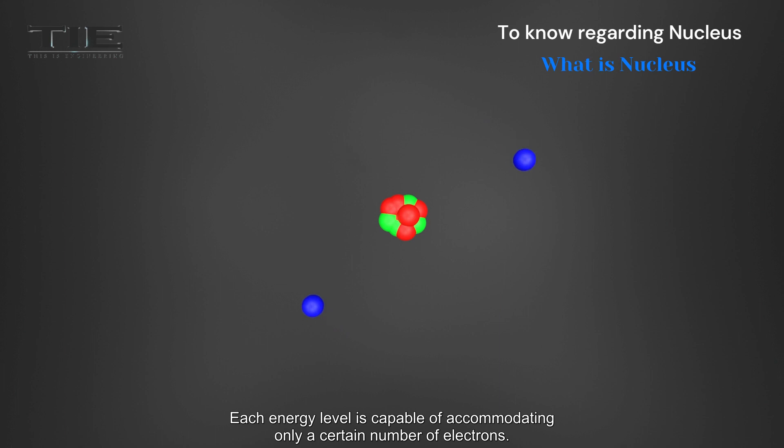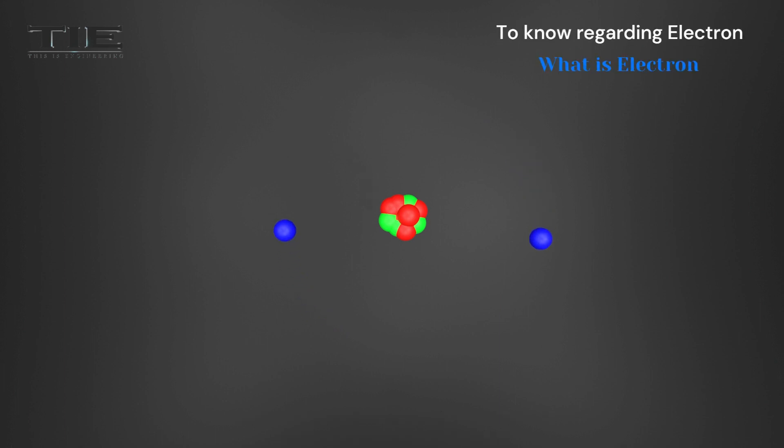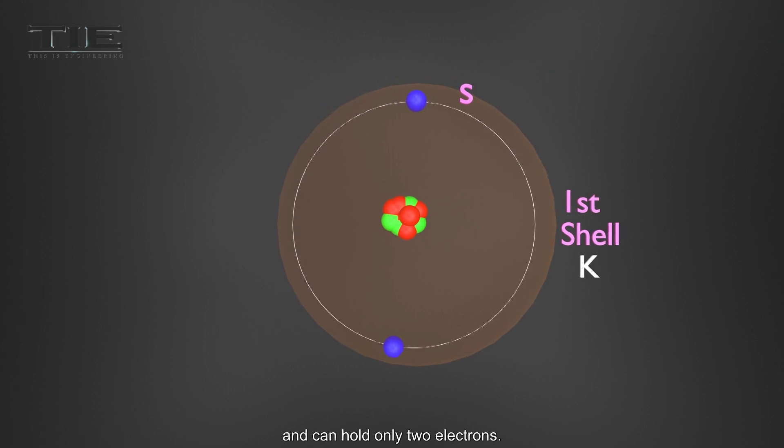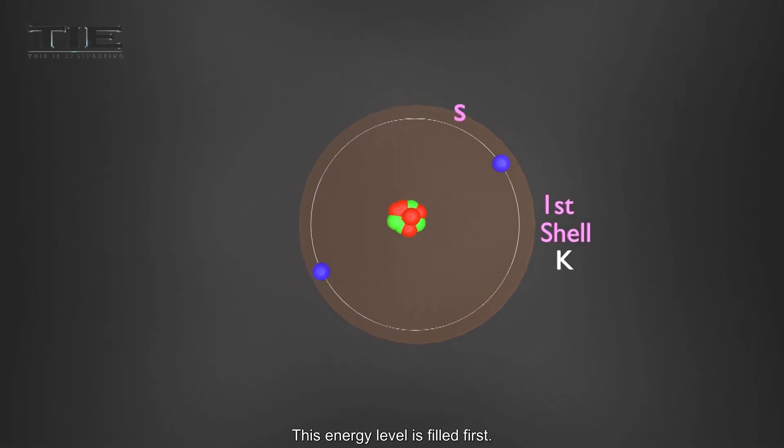Each energy level is capable of accommodating only a certain number of electrons. The first energy level region is called the K-shell and can hold only two electrons. This energy level is filled first.